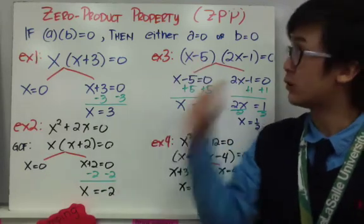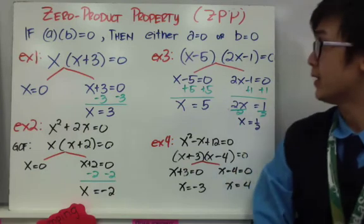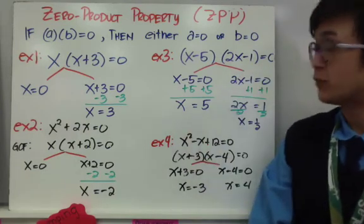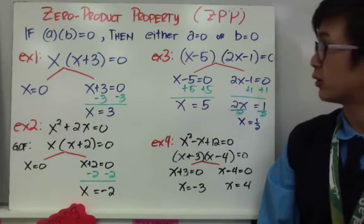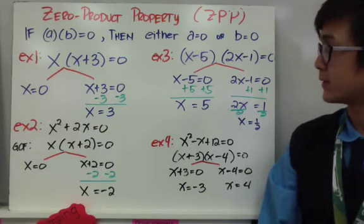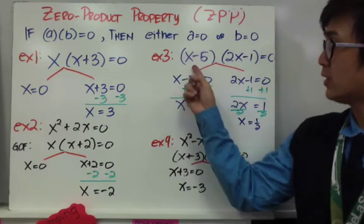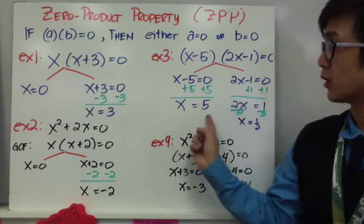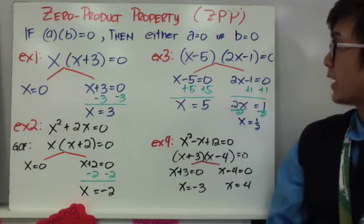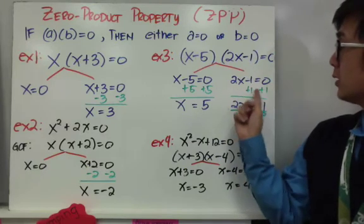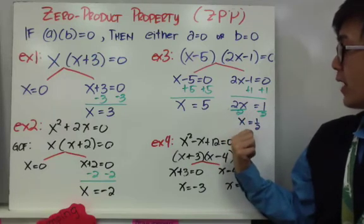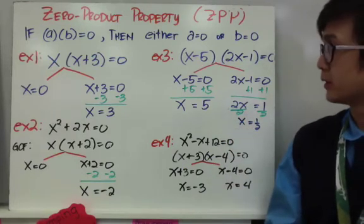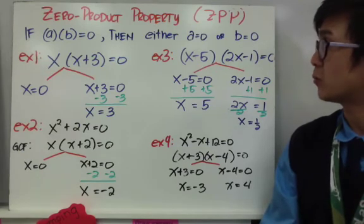A third example uses two binomials. If you have two binomials, split them into two right away and equate each factor to zero. For x minus 5 equals 0, x equals 5. For 2x minus 1 equals 0, subtract 1 on both sides and divide by 2, so x equals 1 half. Again, we have two values of x using the zero product property.